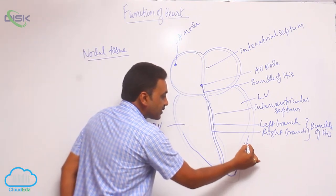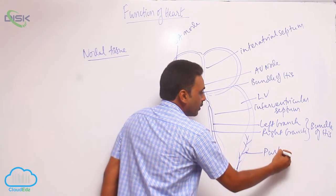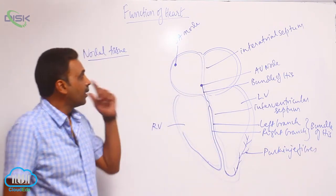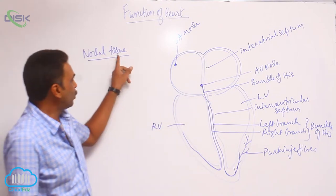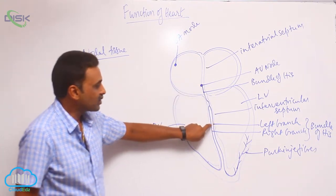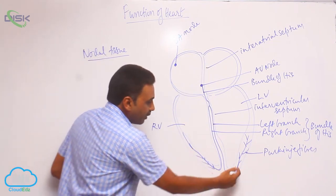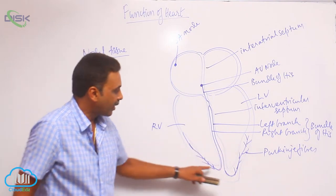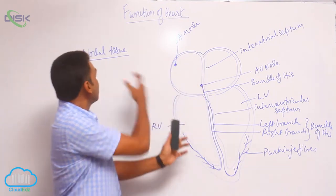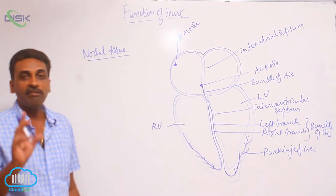Inside the wall of the ventricles, the branches end up with Purkinje fibers. They are called Purkinje fibers. This is the total nodal tissue. Nodal tissue includes SA node, AV node, bundle of His, left and right branches of the bundle of His, and terminally the left and right branches have fibers called Purkinje fibers. Nodal tissue is formed by modified cardiac muscles.